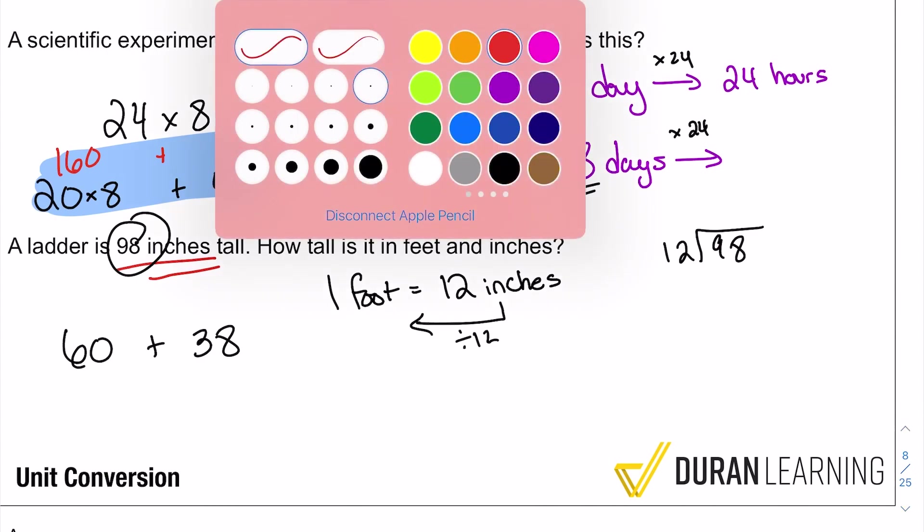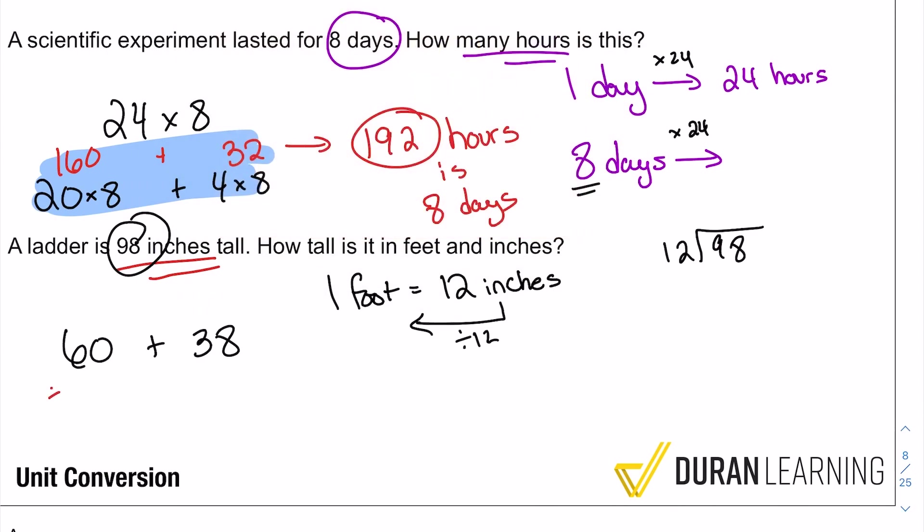and again, this is happening in my head. If you know long division, go ahead and do long division, but I'm showing you mental math so you can be quicker every time. So 60 divided by 12, that's five. I knew that because I know my times tables. 12 times five is 60.